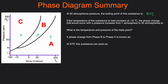The second question asks: if the temperature is held constant at negative 15 degrees Celsius, what phase change occurs when pressure goes from 1 ATM to 30 ATM? We start at 1 ATM and move upward. At negative 15 degrees Celsius, we're moving from region A (gas) into region C (solid), so the phase change is deposition.